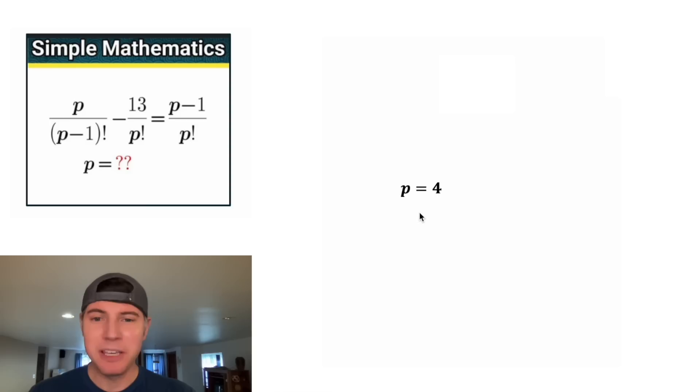Now let's go back to our problem. So p equals 4 is the solution to this simple mathematics problem. Let's put a box around it. How exciting.